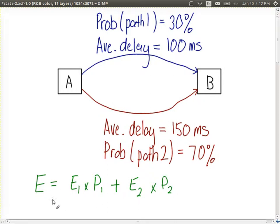So we have values for this. The expected value for path 1 is 100 milliseconds and the probability is 0.3 or 30%. And for path 2 it is 150 milliseconds with a probability of 0.7.